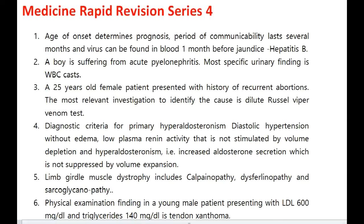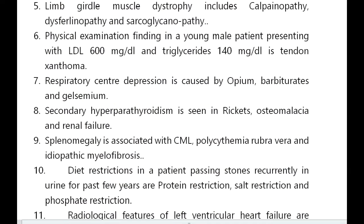Diagnostic criteria for primary hyperaldosteronism: diastolic hypertension without edema, low plasma renin activity not stimulated by volume depletion, and hyperaldosteronism — increased aldosterone secretion not suppressed by volume expansion. Limb girdle muscular dystrophy includes calpainopathy.